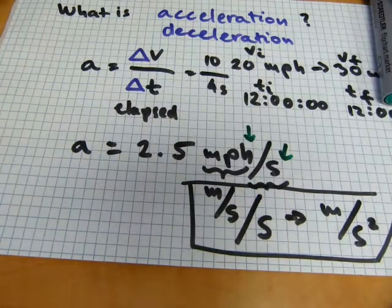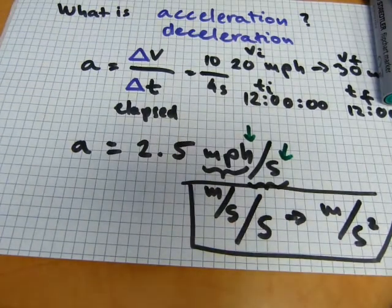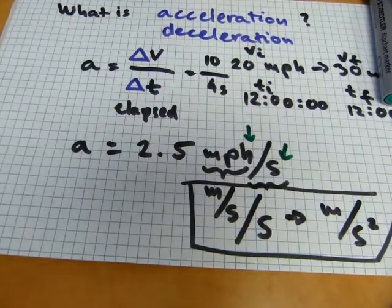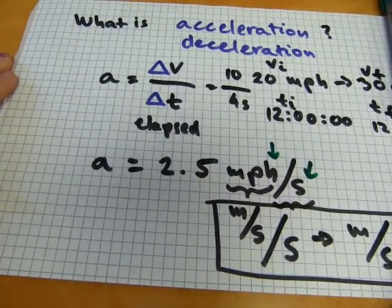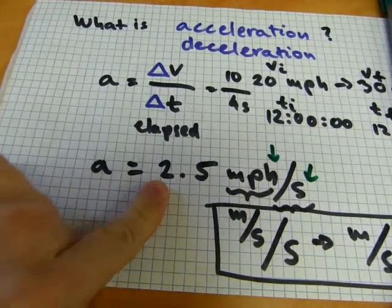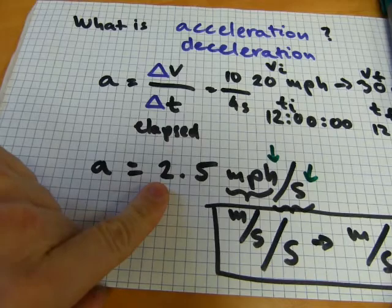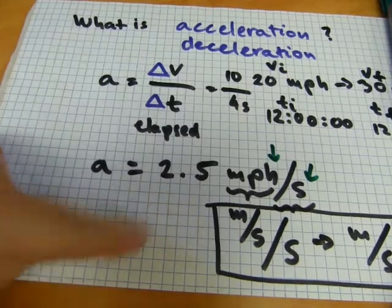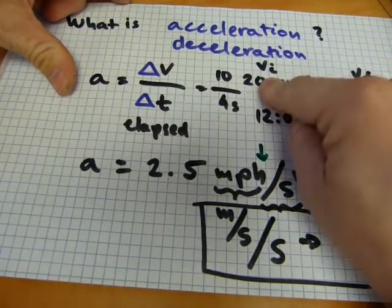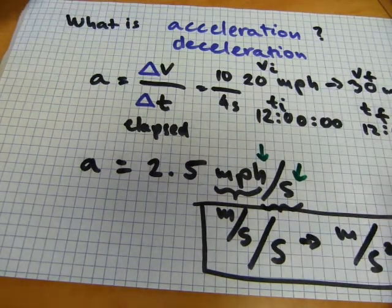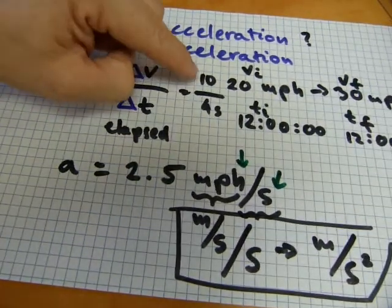Going back to acceleration and deceleration: if this number is a positive number, you accelerated. And if this number is a negative number - if you went from 30 to 20 - then it's a deceleration and that would be a minus 10. And minus 10 divided by positive 4 is going to be a minus 2.5.